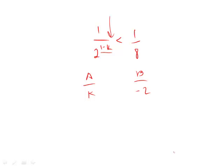Therefore, in order to abide by this less than sign, we have to make sure that k is less than negative 2 or more negative, such as negative 3. If we put negative 3 in here, we get 1 over 2 to the fourth or 1 over 16, which is definitely less than 1 eighth.